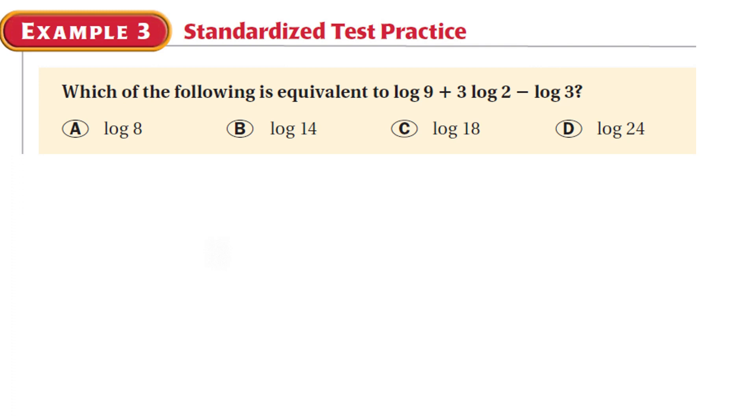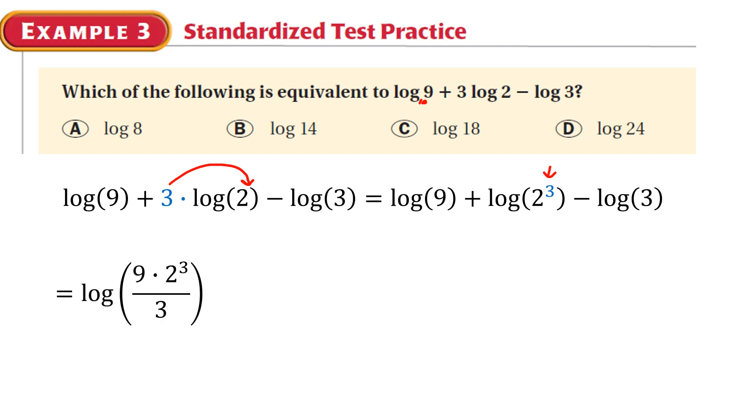Which of the following is equivalent to log 9 plus 3 times log of 2 minus log of 3? So here we have a log base 10, also known as a common log. And it's the opposite of what we did the last problem. So the first thing I will take care of is this 3. It's going to get moved back as an exponent. So you see that over here. And I could take all three of those things and write it as a single log. So that's log of 9 times 2 to the 3rd, because those are being added. And everything is being divided by 3, because of that minus there.